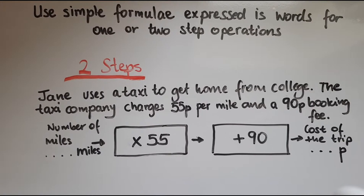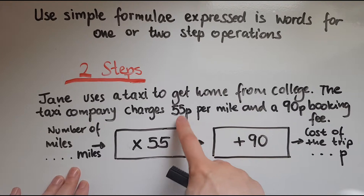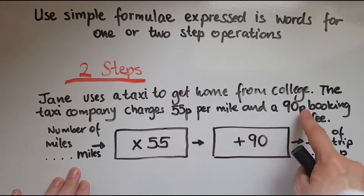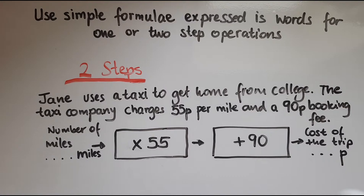Now, the two-step operations. Here is an example: Jane uses a taxi to get home from college. The taxi company charges 55 pence per mile and a 90 pence booking fee. So we take the number of miles, multiply by 55 — the pence per mile — and add 90, which is the booking fee in pence. This gives us the cost of the trip in pence. The question might ask: Jane's trip is three miles long — work out the cost of the trip.